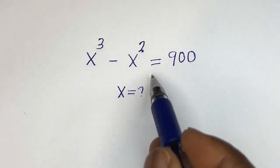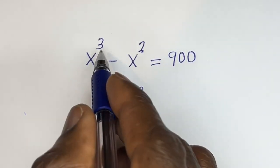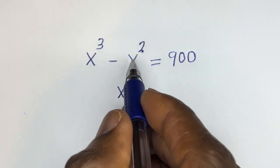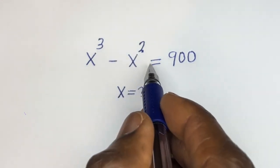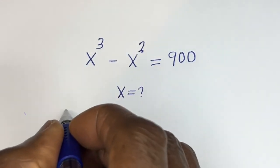Hello. How to solve for s in this equation: s to the power of 3 minus s squared is equal to 900. Solution.